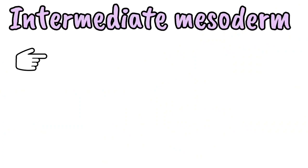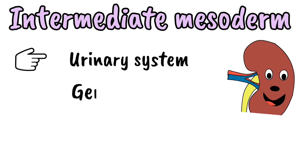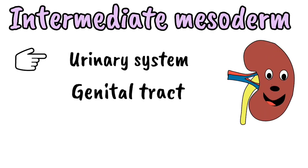The last subdivision of the intraembryonic mesoderm is the intermediate mesoderm, which gives rise to the urinary and genital systems. That concludes this topic.